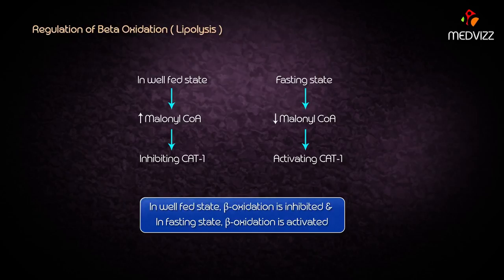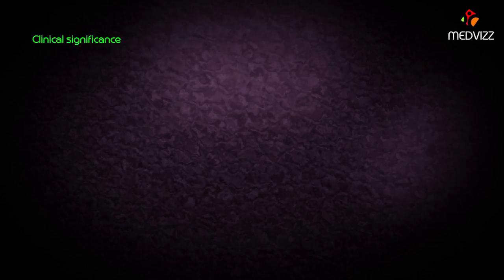In summary, in the well-fed state beta oxidation is inhibited and during fasting state beta oxidation is activated. This is the reason insulin inhibits beta oxidation and glucagon activates beta oxidation.